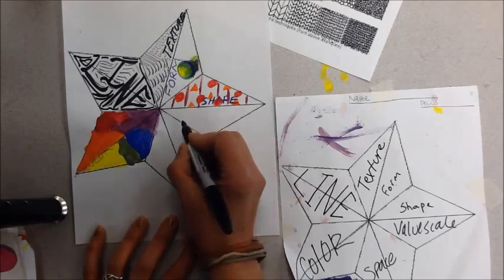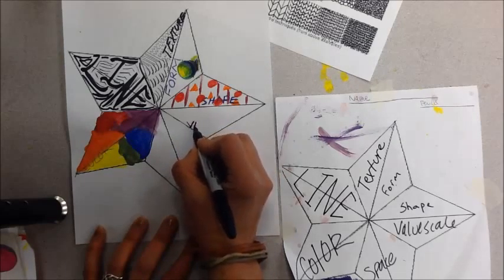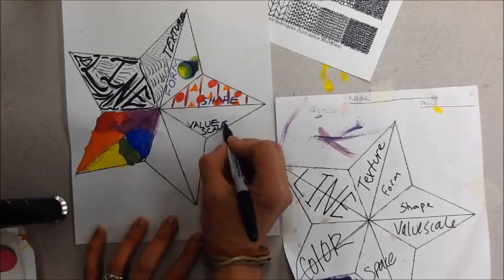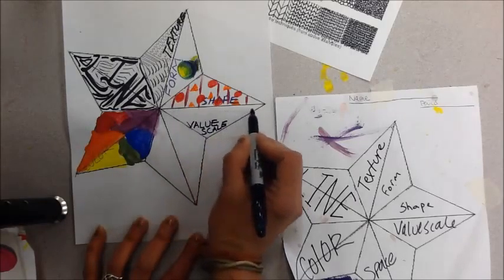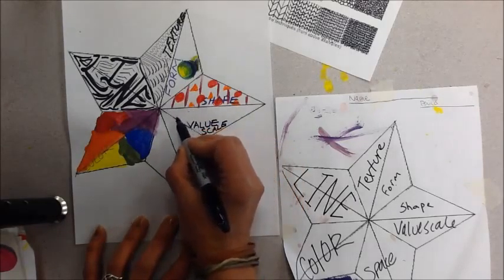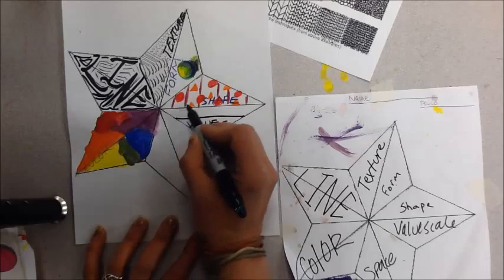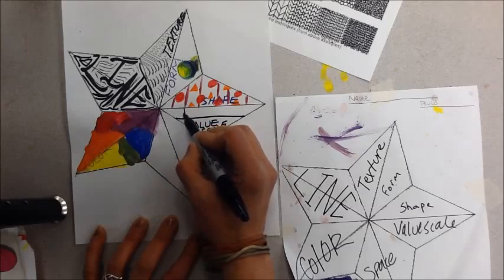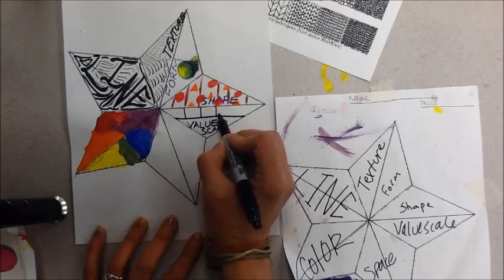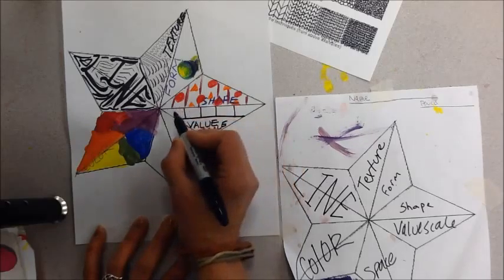So first I'm going to write down in this corner value scale. And now up here I'm going to do five different shades. So I'm going to go ahead and break that up. So that's going to be one, two, three, four, five.